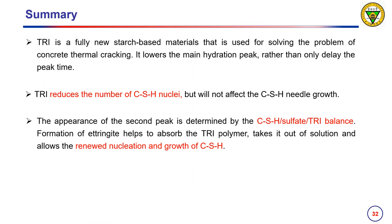To summarize: TRI is a fully new starch-based material used to solve the problem of concrete thermal cracking. It lowers the main hydration peak rather than only delaying the peak time. TRI reduces the number of C-S-H nuclei but does not affect C-S-H needle growth. The appearance of the second peak is determined by the C-S-H surface TRI balance. Formation of ettringite helps to adsorb the TRI polymer, take it out of solution, and allow renewed nucleation and growth of C-S-H.